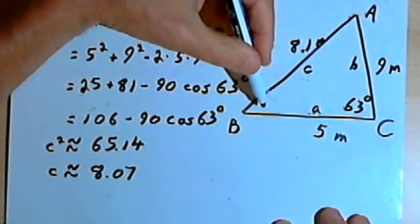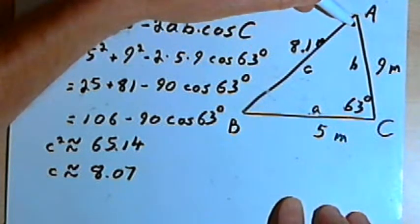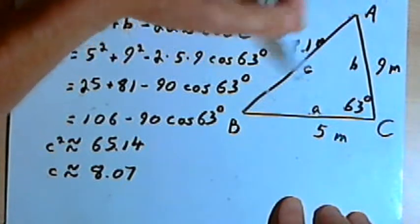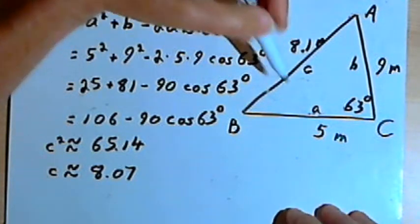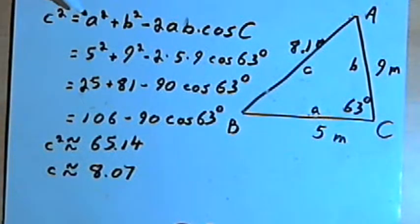If we wanted to find the other two angles, we could use the law of sines, and we'd have enough information here to find those two angles. But I want to do another example with the law of cosines.